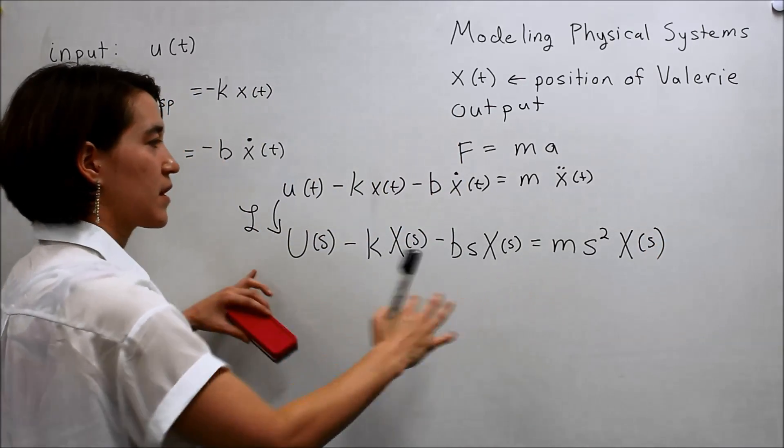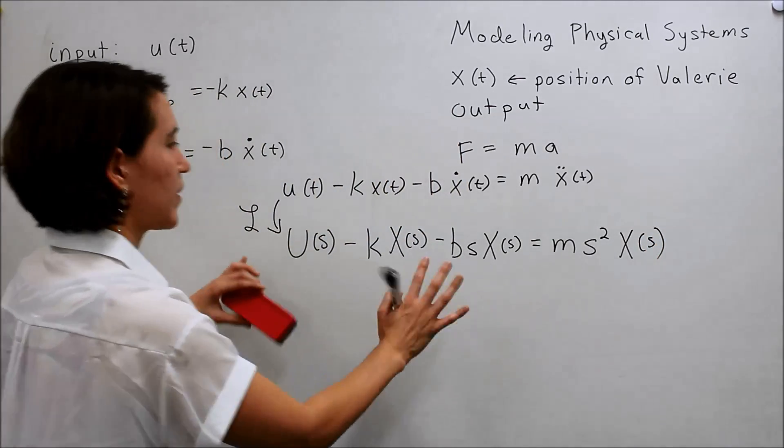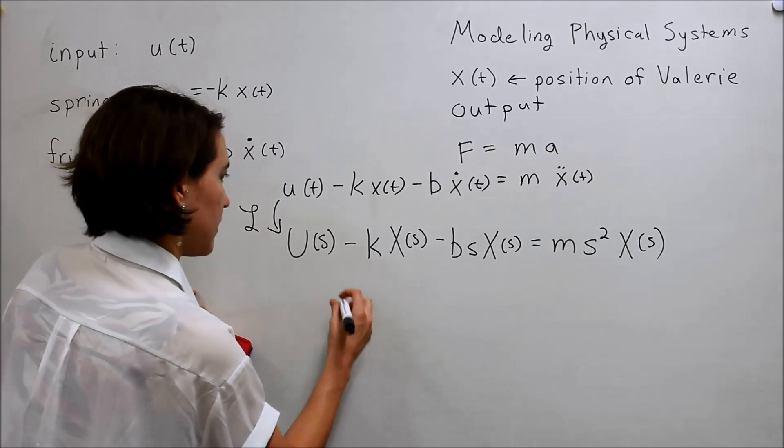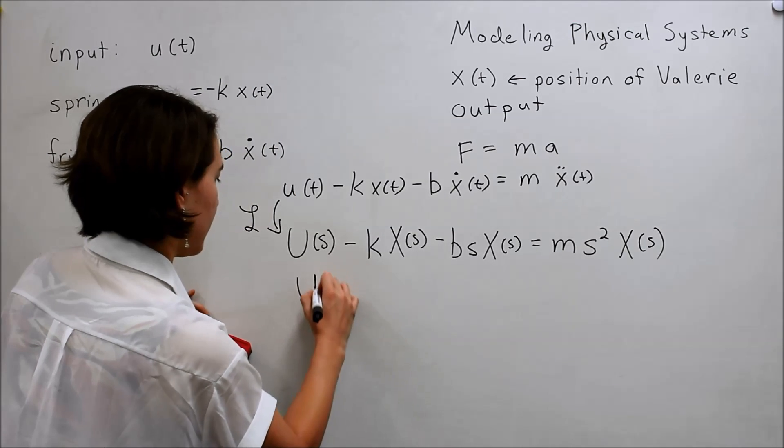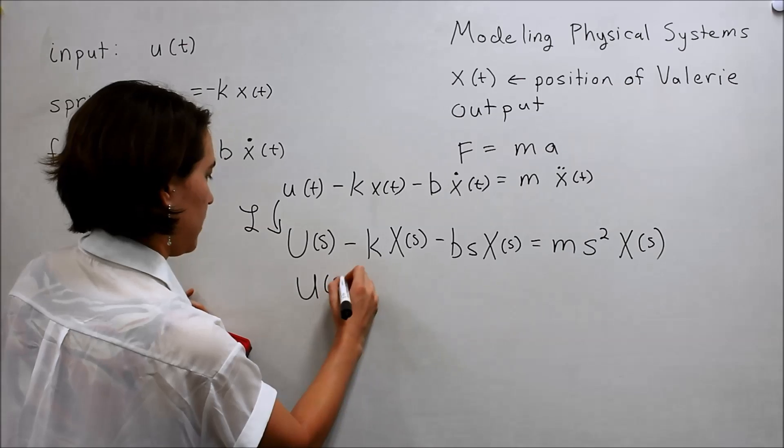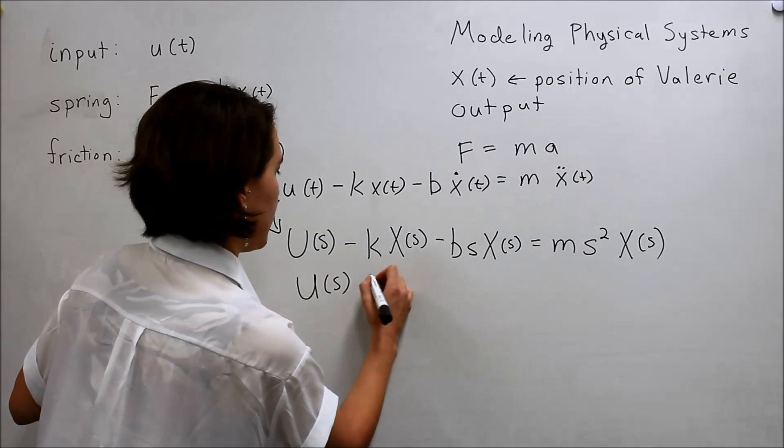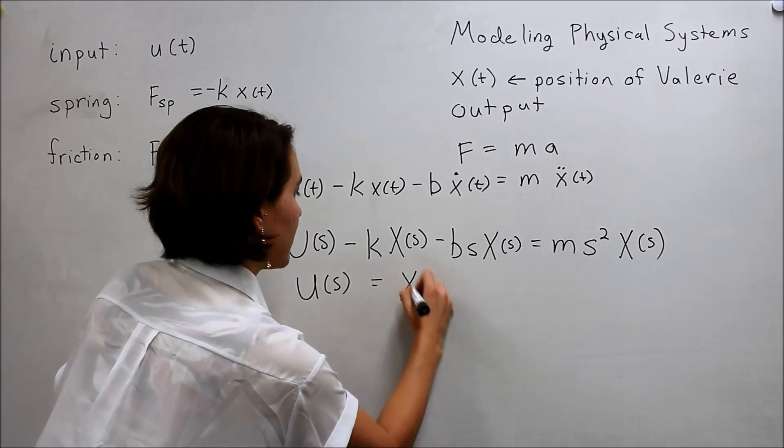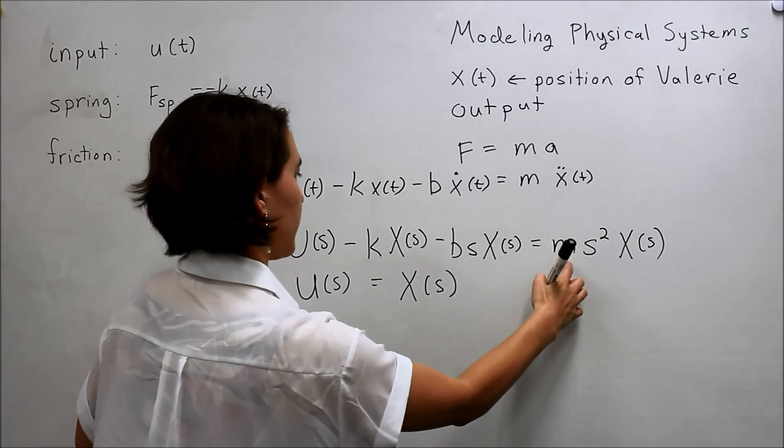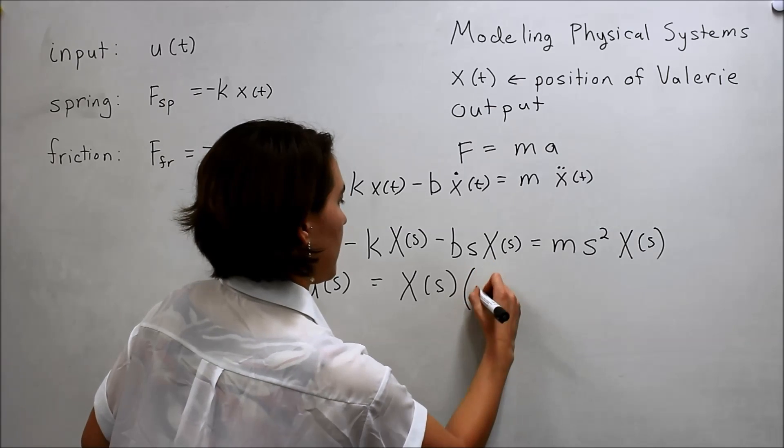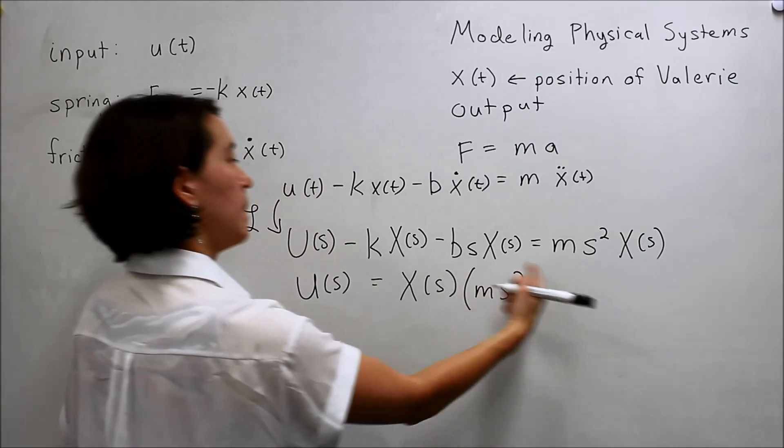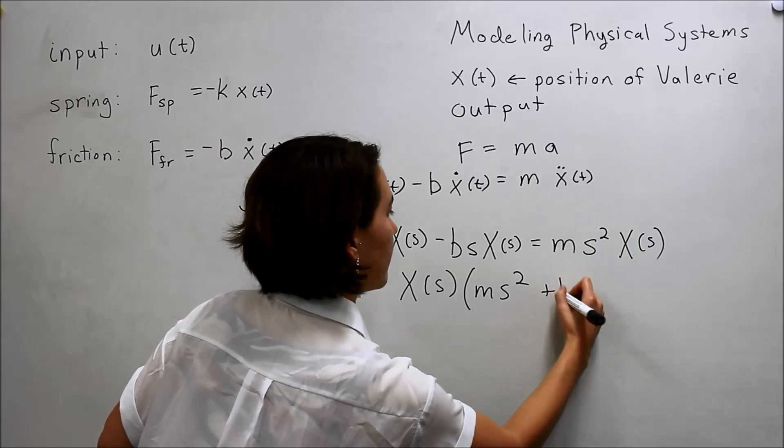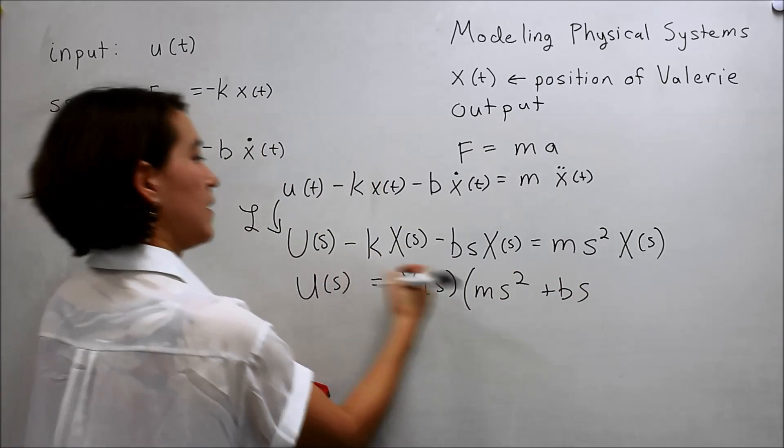So we have some terms. Let's separate things and put everything on one side. So we'll put the u on the left side. U(s) is on this side. And then we'll move all of these over there. So it'll be X(s), and we'll start with this one. So ms squared plus bs plus k.